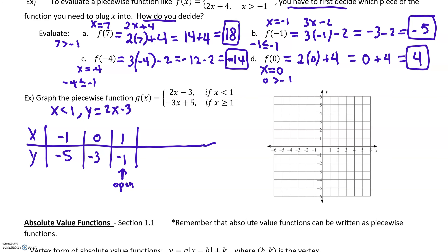Let's graph the first piece. We plot negative 1, negative 5 down here; 0, negative 3 — that's our y-intercept; and 1, negative 1. We follow a slope of 2: up 2, right 1. Since x is strictly less than 1, we leave an open circle at the endpoint (1, negative 1). There's the first piece of the graph.